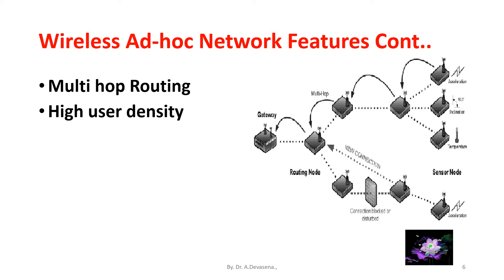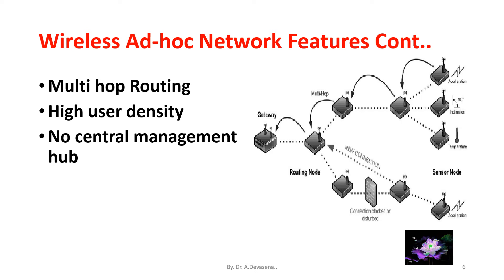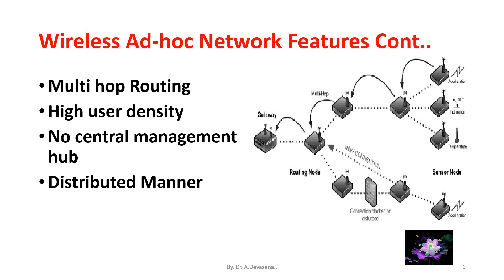The thirteenth feature is that in ad hoc networks, no central management hub is required from where all devices can be controlled. The last feature is that in ad hoc networks, operations are performed in a distributed manner — distributed nature of operation for security, routing, and host configuration. A centralized firewall is absent. There is no background network for the central control of network operations; the control of the network is distributed among the nodes.